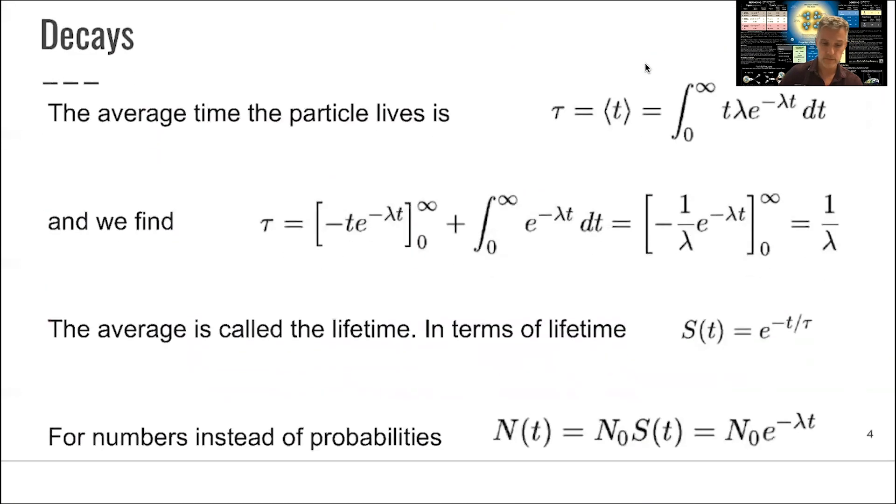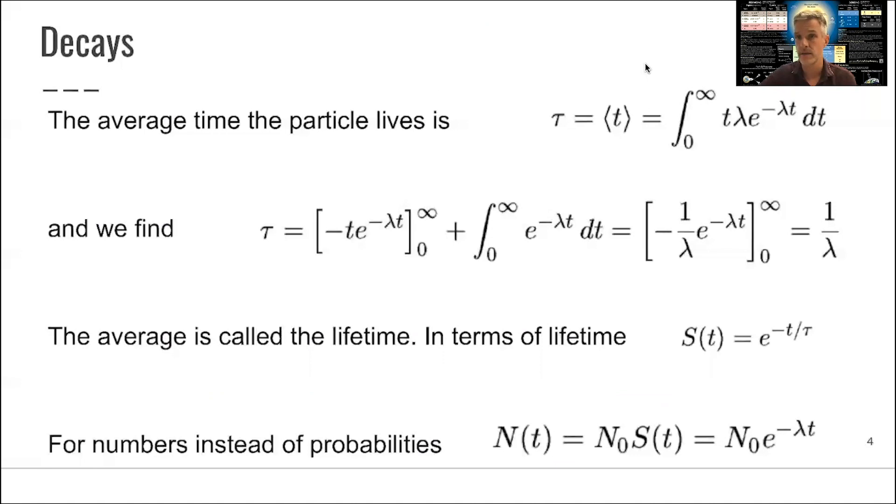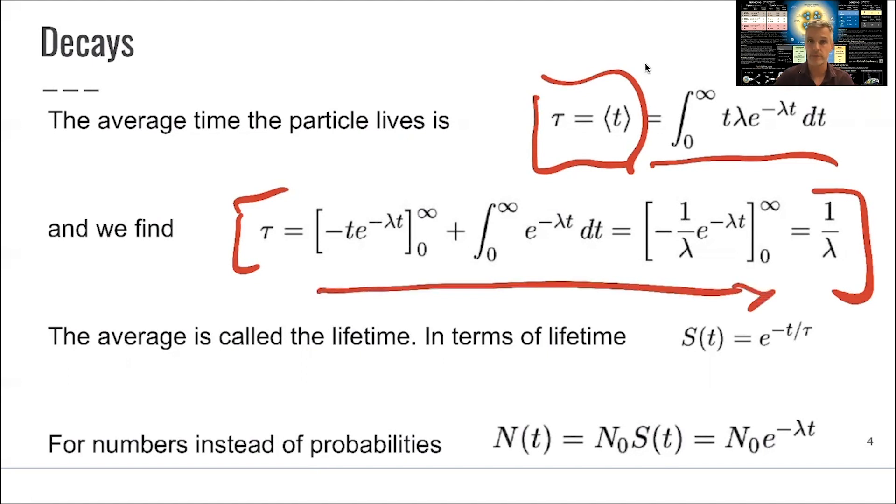We can now define and look at this distribution a little bit more. We can, for example, look at the average time that a particle lives. This average time tau is simply given by the integral from 0 to infinity. We integrate over this distribution to get the average time for the particle. And that's equal to 1 over the decay rate, 1 over lambda.